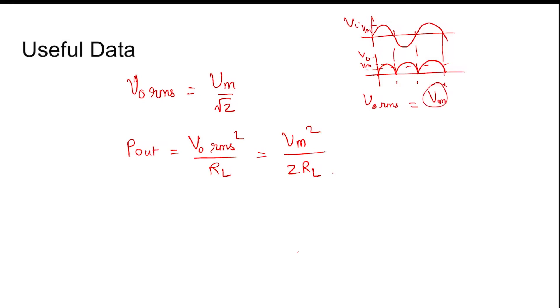So power is V_rms squared divided by load resistance RL. This comes out to V_m squared divided by 2RL.